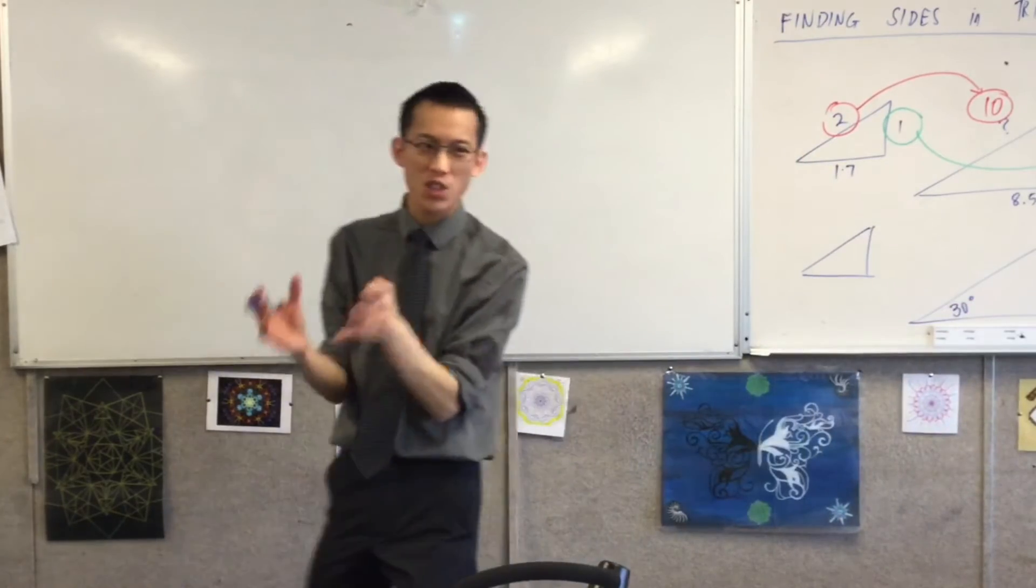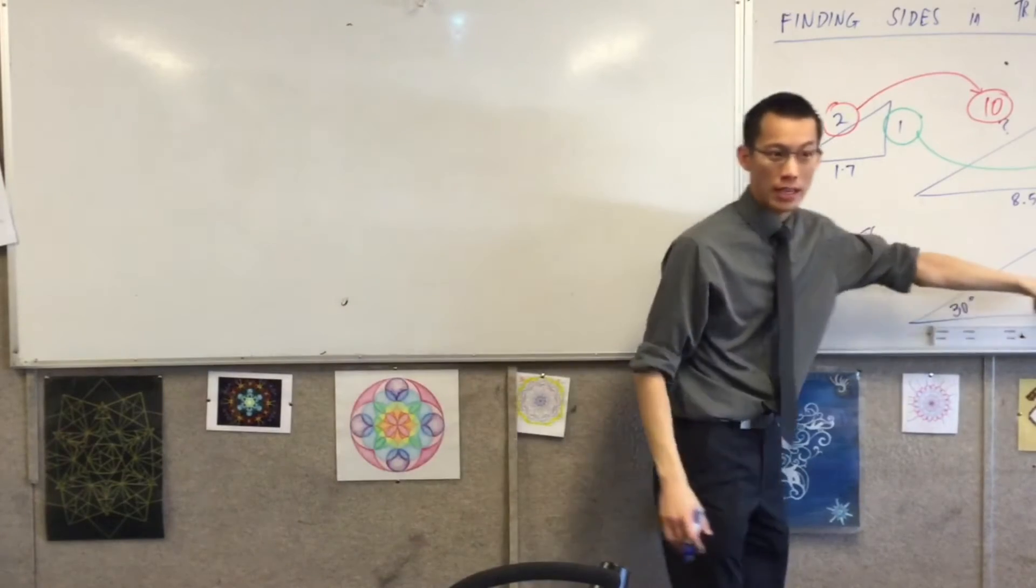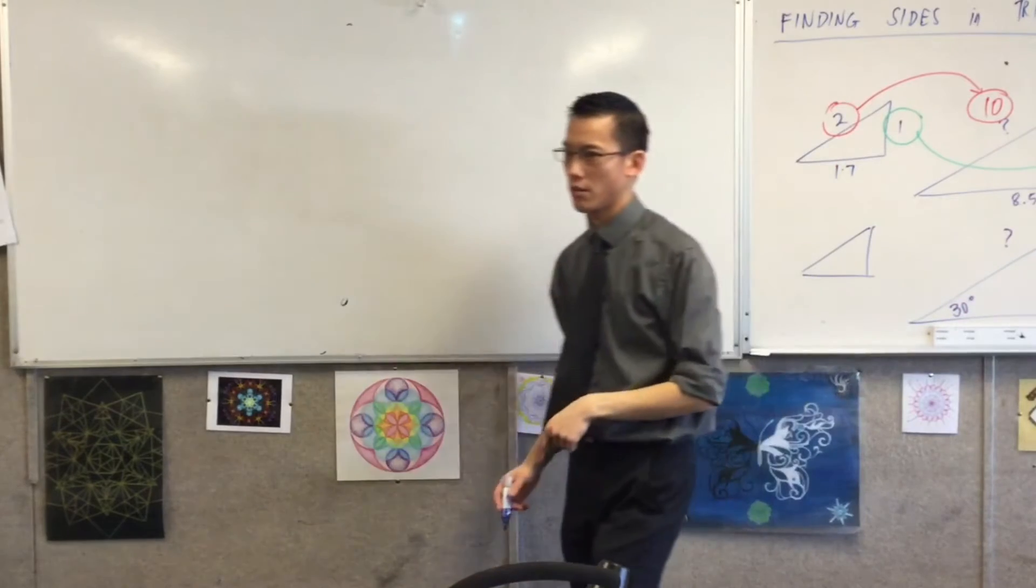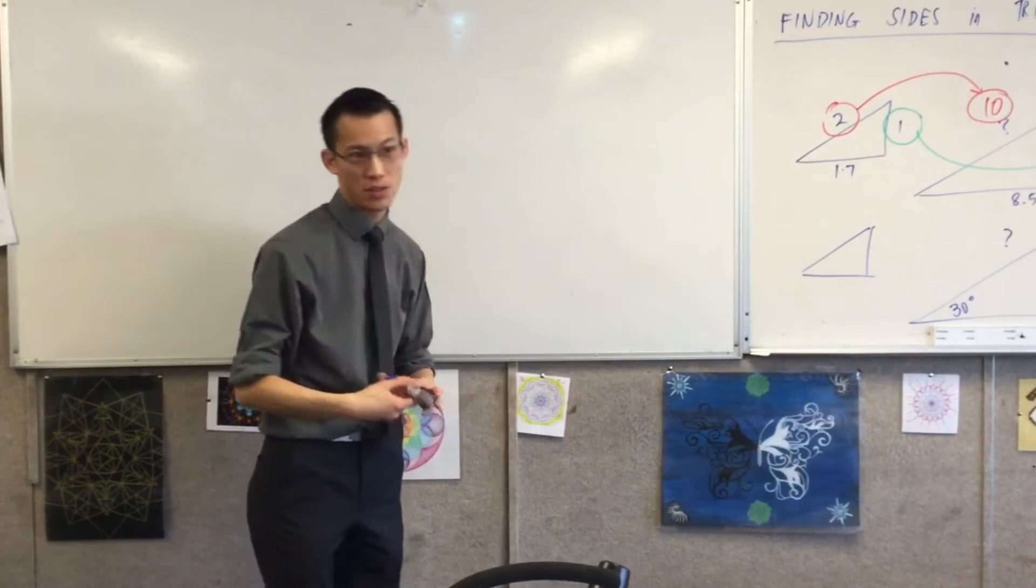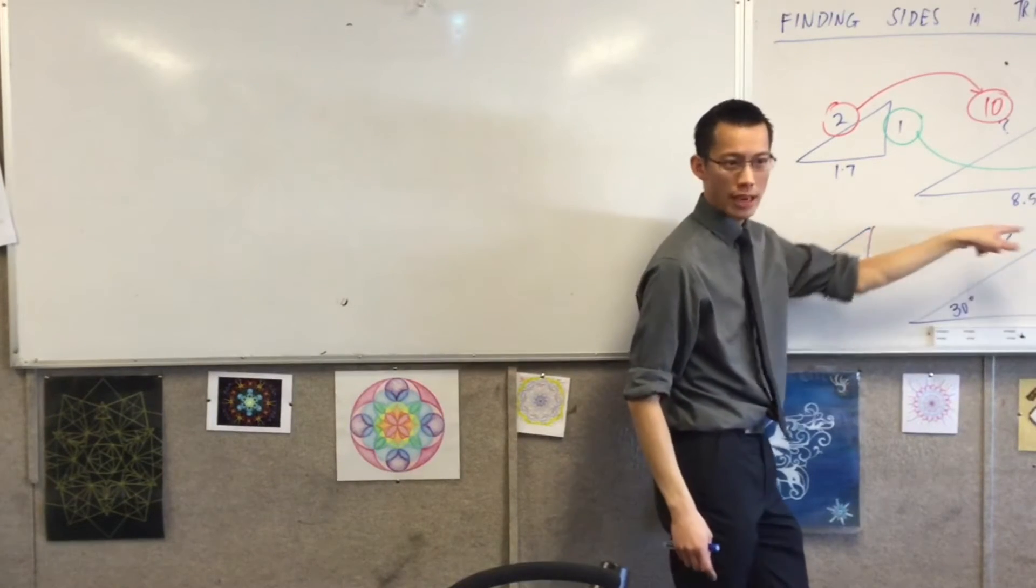And we saw no matter what size of triangle you made, if you had the same angles over here, down in the corners, right, you were always going to get the same ratio. Right? Now, have a look. I mean, I chose this because it was basically the one you did yesterday. You had your 30 degrees here.